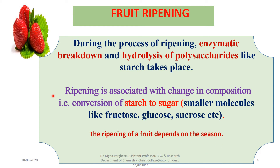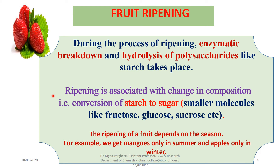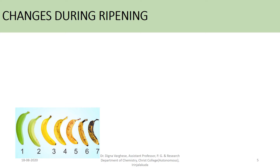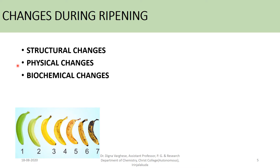The ripening of a fruit depends on the season. We get mangoes only in summer, but apples only in winter. The changes involved during ripening are: first, structural changes; second, physical changes; and third, biochemical changes. We now deal with structural changes.